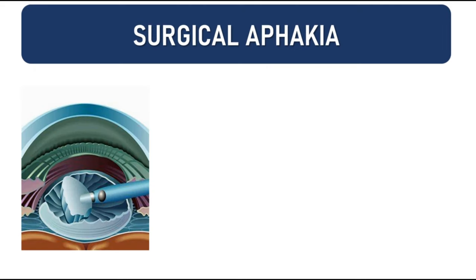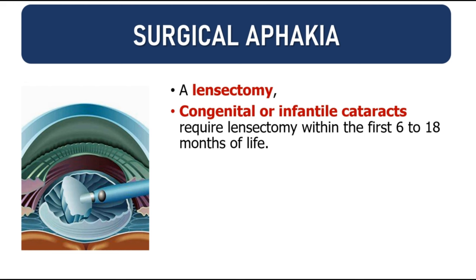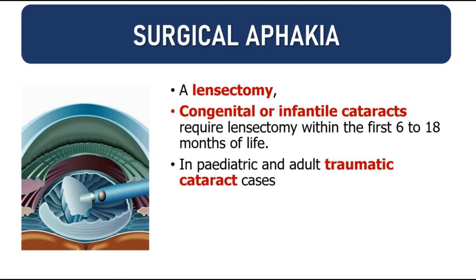Surgical aphakia occurs whenever the lens is removed surgically, a procedure known as lensectomy. This is usually done in congenital and infantile cataracts, which require lensectomy within about 6 to 18 months of life to prevent amblyopia development. In pediatric and adult traumatic cases, a primary lensectomy is often necessary to allow complete healing before proceeding with secondary IOL implantation. Surgical aphakia can also be an unintentional complication, for example in case of a posterior capsular rupture (PCR).